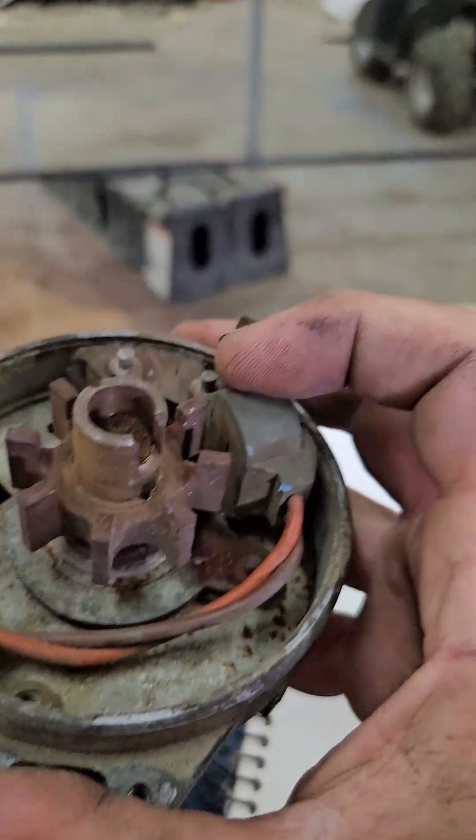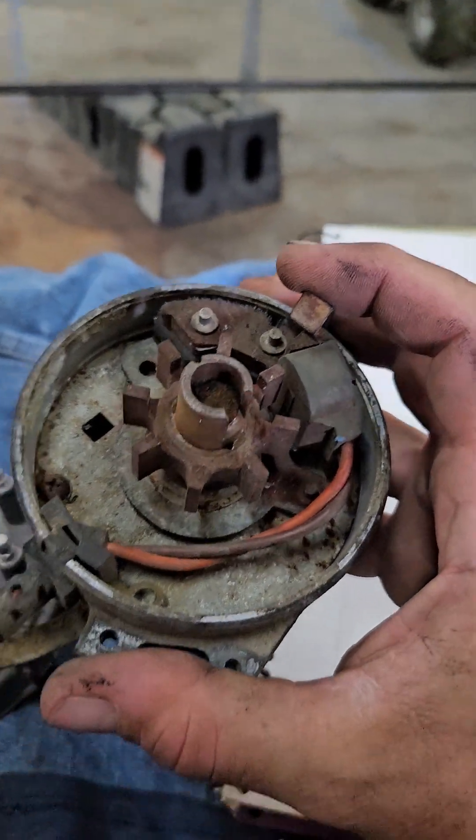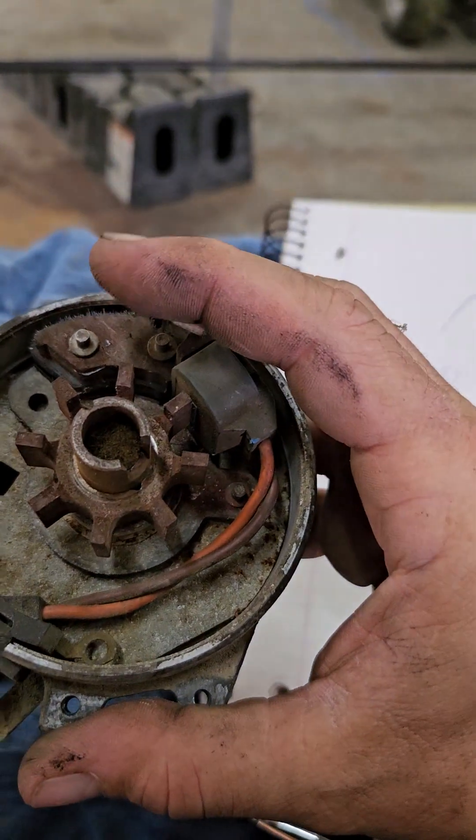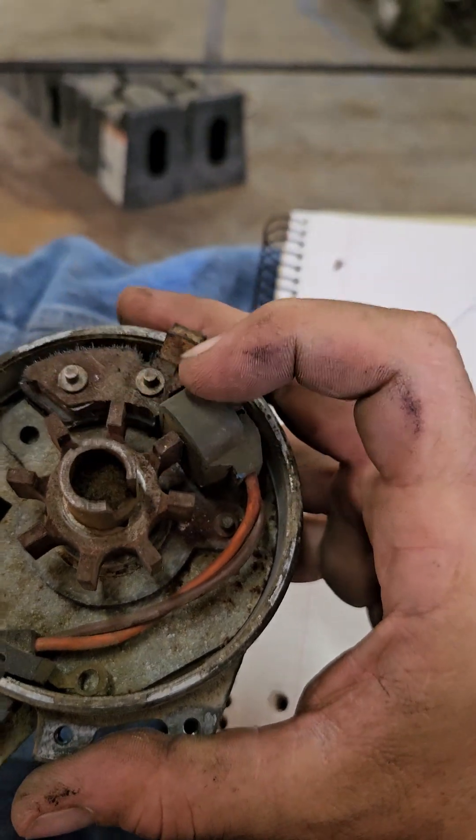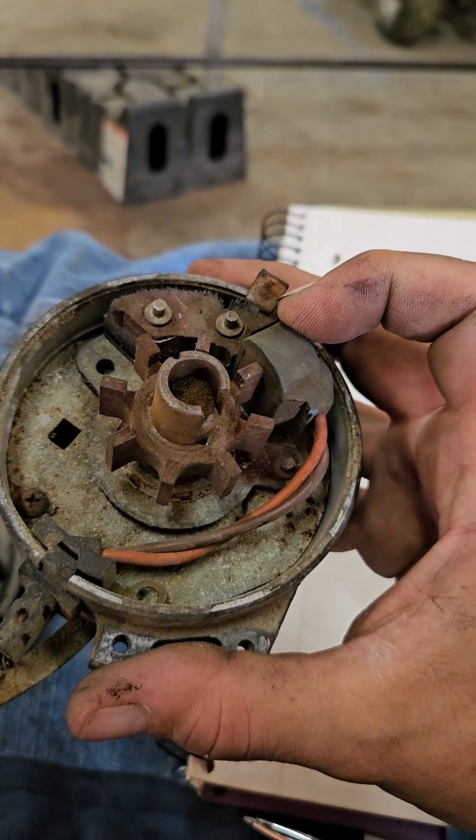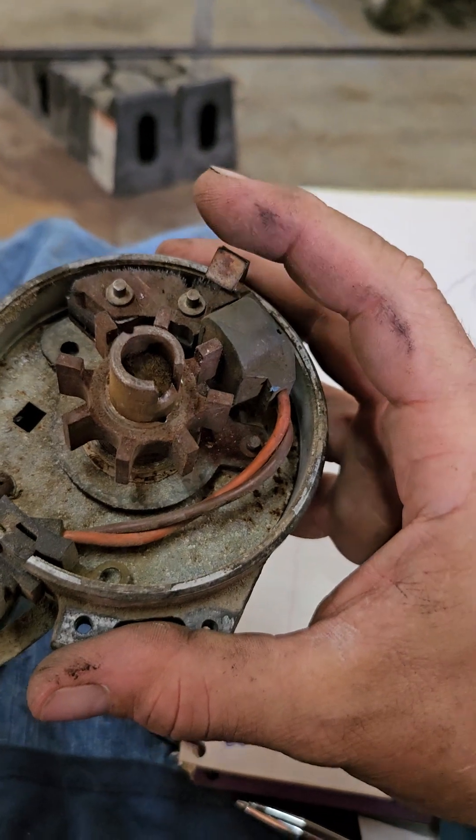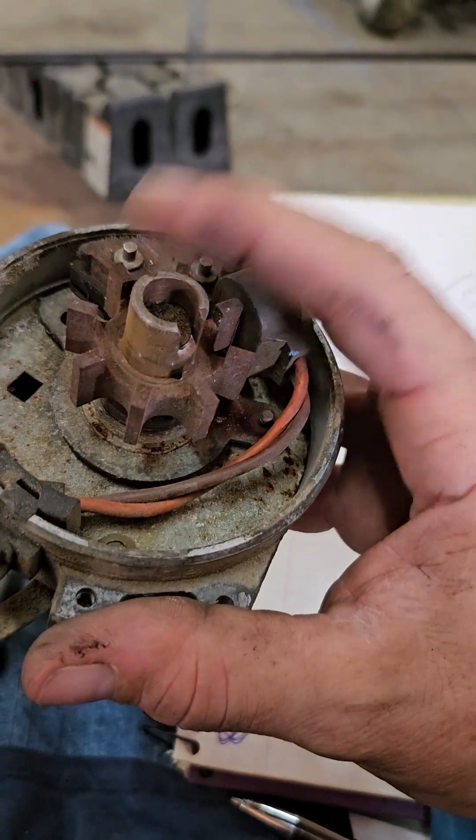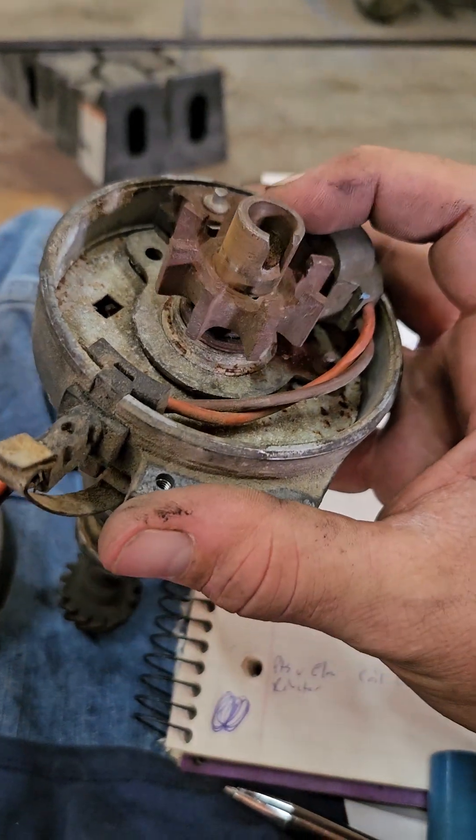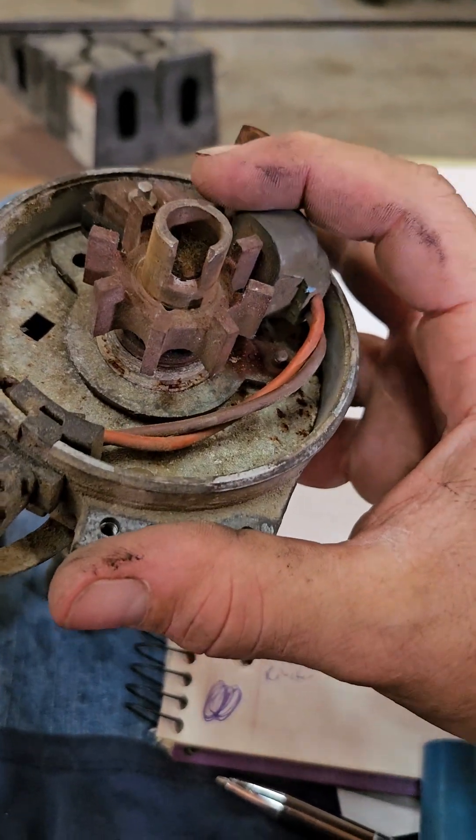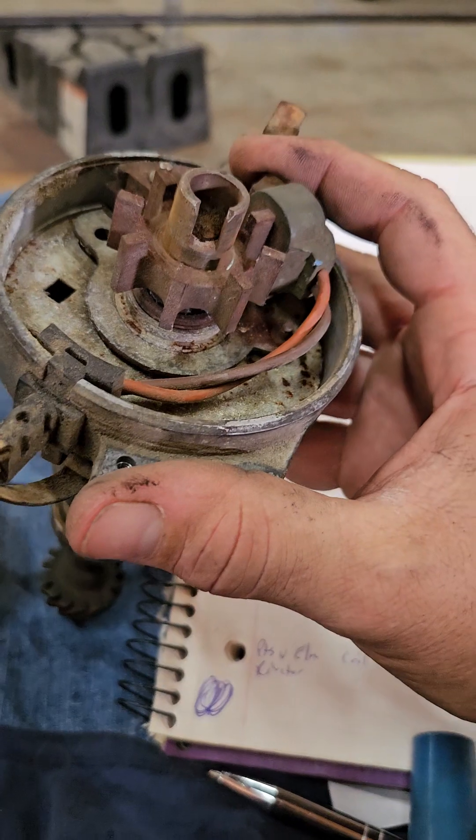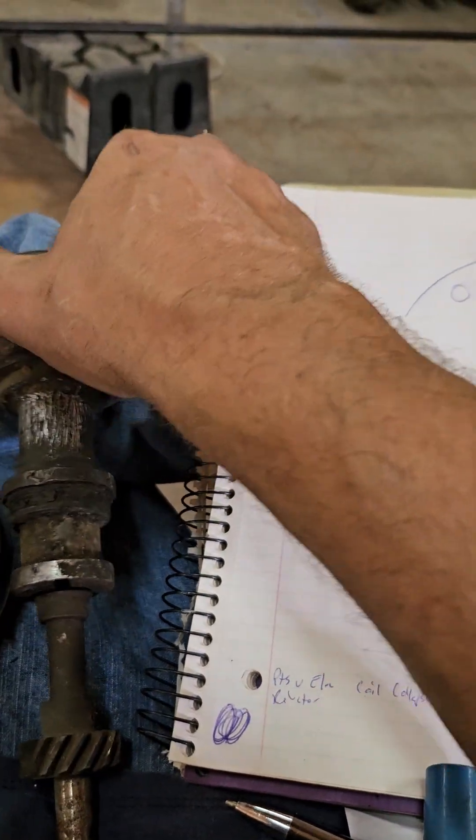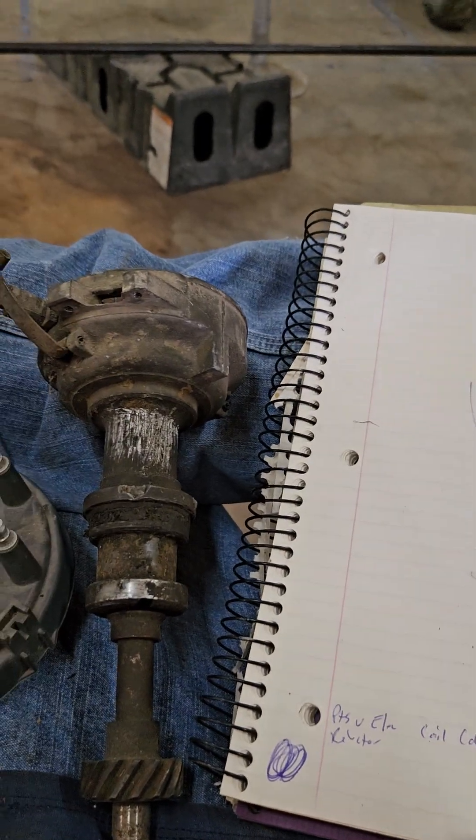On a stock distributor, the only way I see that you could physically correct it would be to get rid of the vacuum advance and figure out a way to move the reluctor wheel and then lock it down. That would allow you to correct rotor phasing. But like I said, the way I understand it, I don't think mechanical advance will affect your rotor phasing, but controlling timing with a box or vacuum advance will.